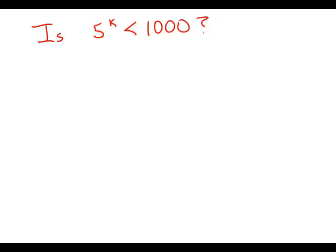Is 5 to the k less than 1,000? Very simple prompt. Statement number 1 tells us that 5 to the k plus 1 is greater than 3,000. This is an interesting statement. Let's explore this.